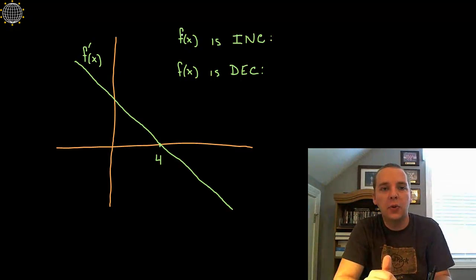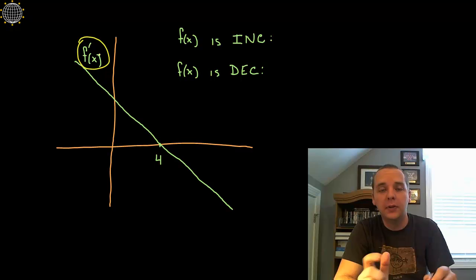They're asking us where is the original function increasing and decreasing and somehow we're supposed to be able to tell that by looking at the derivative, so that's important.